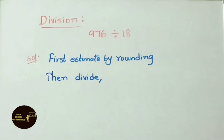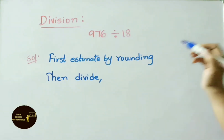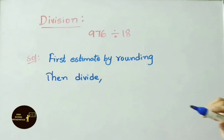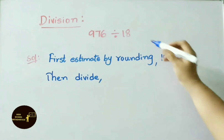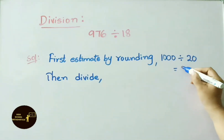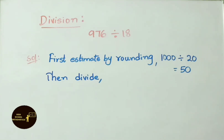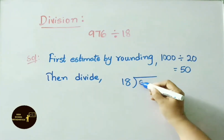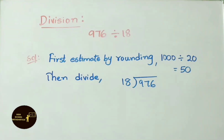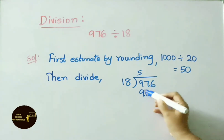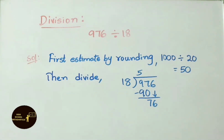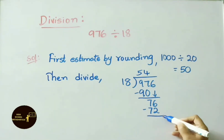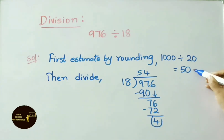Now division examples. Example: 976 divided by 18. Estimate by rounding: 976 nearest thousand is 1,000; 18 nearest 10 is 20. 1000 divided by 20 gives estimated answer 50. Actual division: 18 fives are 90; 97 minus 90 is 7, bring down 6; 18 fours are 72; remainder is 4. Actual division quotient is 54, and our estimation value is 50 — which are nearer.